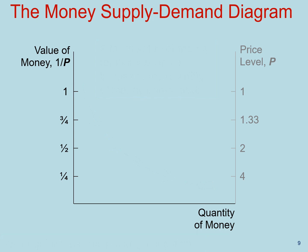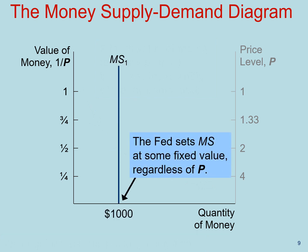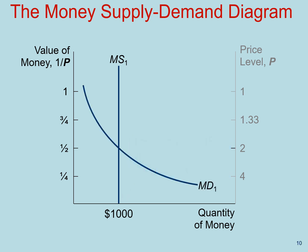On the other hand, money supply in the real world is determined by the Fed, the banking system, and consumers. However, for this model, to make things simpler, let's assume that the Fed precisely controls the money supply and sets it at some fixed amount. Graphically, that means a perfectly inelastic supply curve — a vertical line. The intersection of demand and supply is the equilibrium in this market.